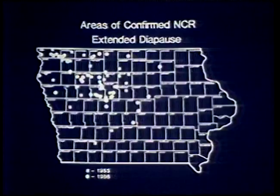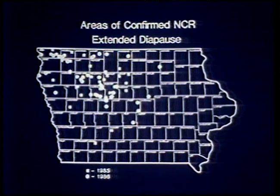This map indicates areas where northern corn rootworm extended diapause, or two-year life cycle, occurred and was documented in 1985 or 1986. In the areas marked on the map, it may be necessary for producers to use rootworm insecticides where corn follows soybeans in 1987. For specific information on how this affects your local area, contact your county extension office and ask for publication IC 451.